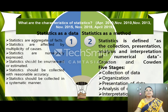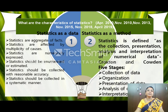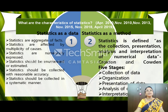When we speak about statistics as a method, it is the collection, presentation, analysis and interpretation of data. All these five stages put together is statistics as a method. The five stages are: collection of data, organization of data, presenting data, analyzing the data, and interpreting the data.